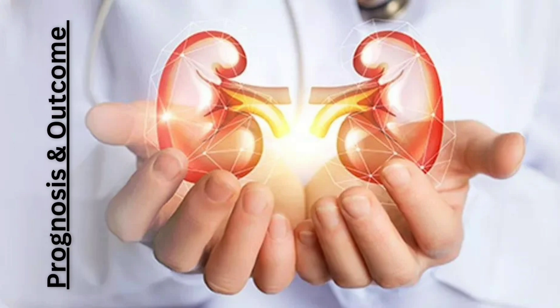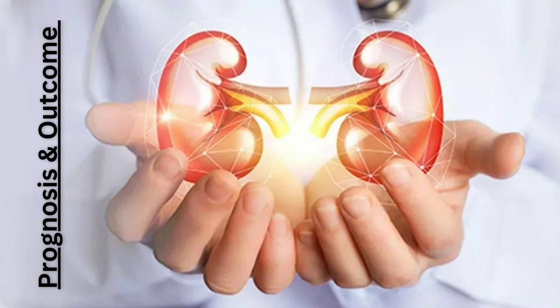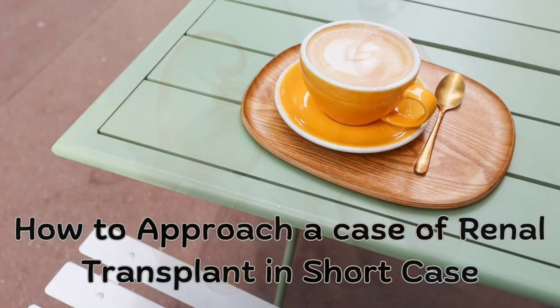The prognosis after renal transplant is generally excellent. One-year graft survival is approximately 95 percent and five-year graft survival is 90 percent, though many factors influence the outcome. Now let's talk about how to approach a case of renal transplant in your short case.